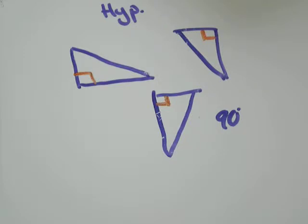Your hypotenuse is not the angle. It's one of the sides. So every triangle, of course, has three sides.